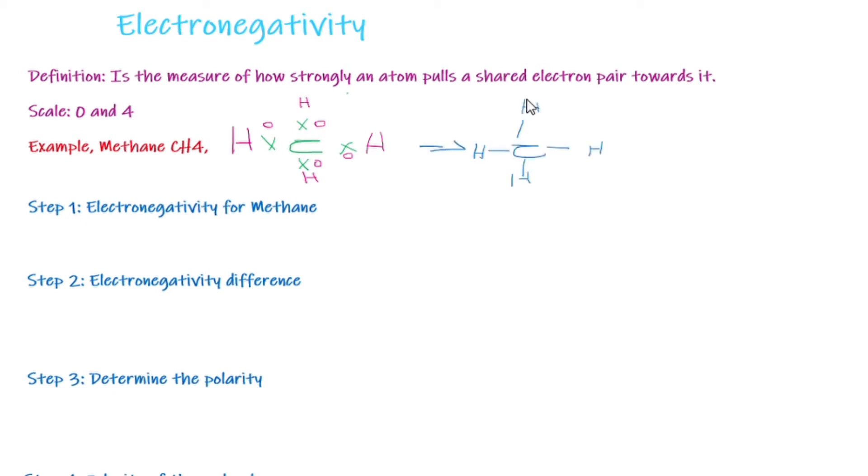Now, what is the electronegativity for methane? First, let's find individual electronegativity values for both hydrogen and carbon. So hydrogen from your periodic table or some textbook has an electronegativity of 2.1. Carbon has an electronegativity of 2.5.